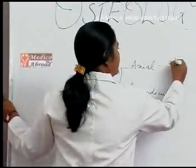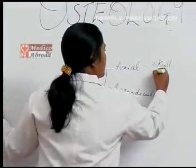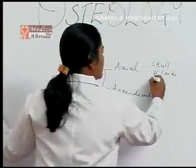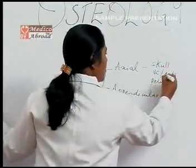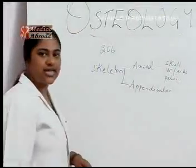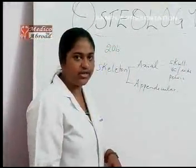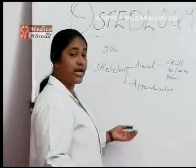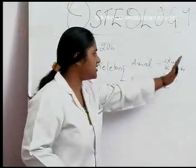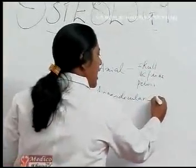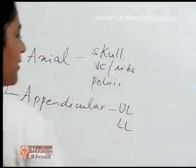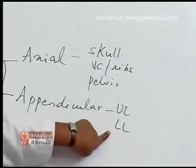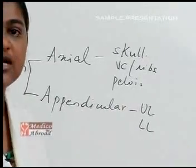The skull, vertebral column, ribs, and pelvis all come under the axial skeleton because they are in the midline of the body. Those parts which are away from the midline — the upper limb and lower limb bones — constitute the appendicular skeleton.